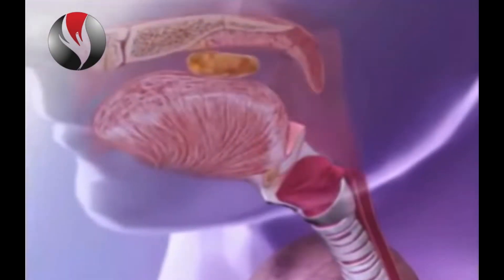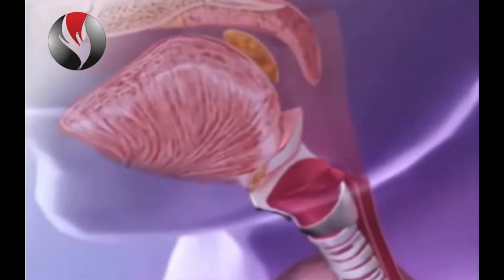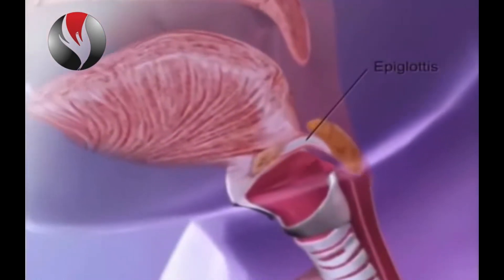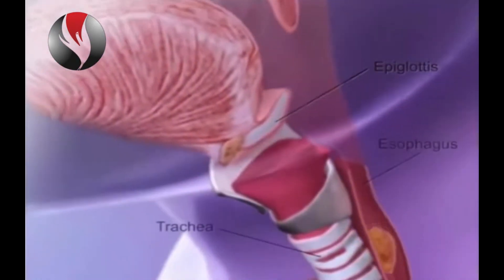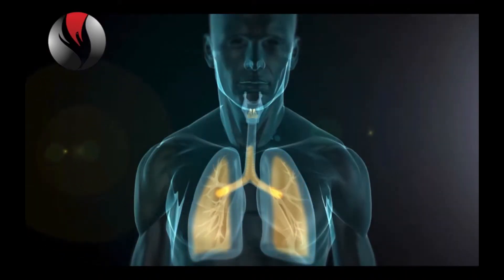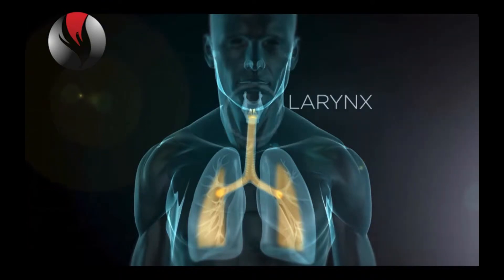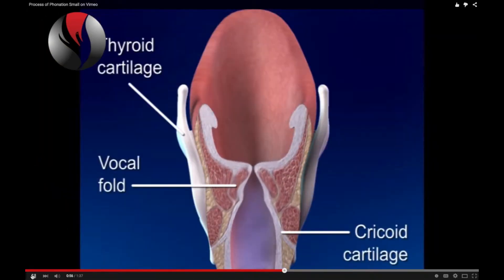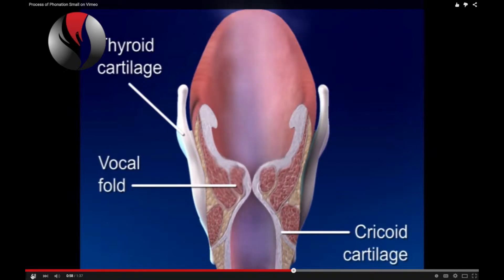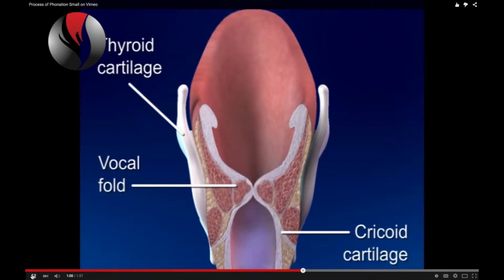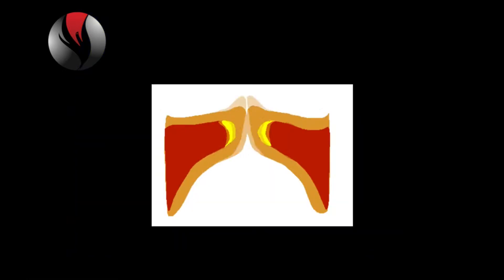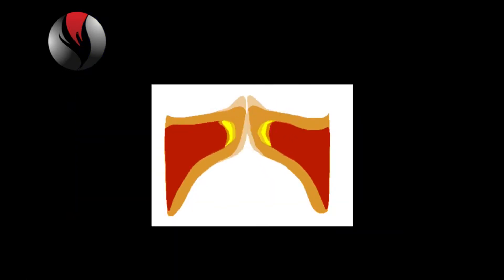The epiglottis closes over the vocal cords when we swallow. Sometimes fluid gets through and we cough to clear it out. When air passes through our vocal cords as we speak or sing, they create a series of sound waves which we can hear. This series of sound waves we call vibration. The vocal cords create the initial vibrations, which are the initial tones we hear that begin the sound we make when speaking and singing.